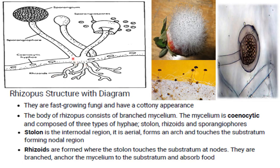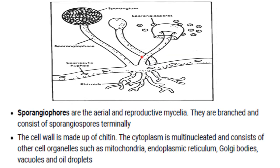The stolon is the inter-nodal region; it is aerial, forms an anchorage, and touches the substratum forming the nodal region. Rhizoids are formed where the stolon touches the substratum at the nodes; they are branched, anchor the mycelium to the substratum, and absorb food. The sporangiophore are the aerial reproductive mycelium. The cell wall is made up of chitin, and the cytoplasm is multinucleated, containing mitochondria, endoplasmic reticulum, Golgi bodies, vacuoles, and oil droplets.